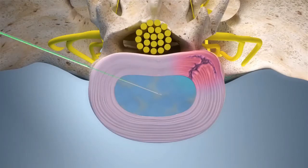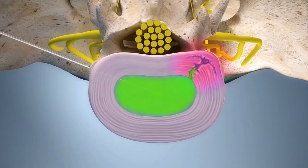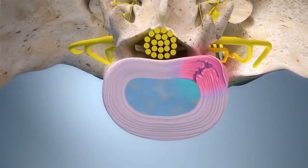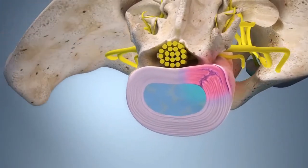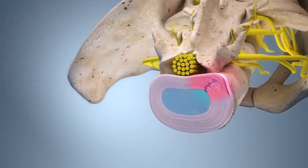With the needle inside the disc, a contrast agent is injected. The patient may feel pressure or pain during administration of the contrast agent. If in pain, the patient is questioned about whether the pain is similar to their usual pain.